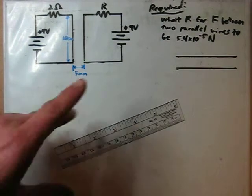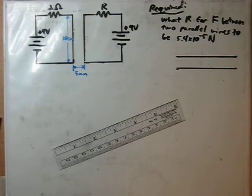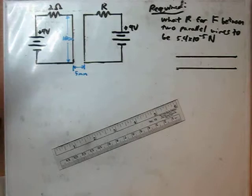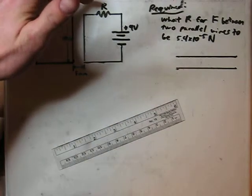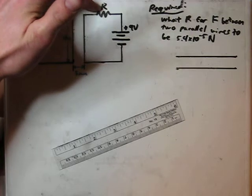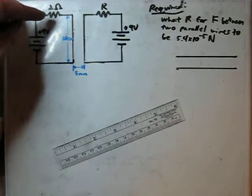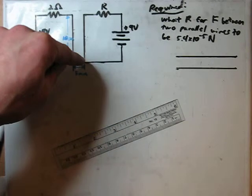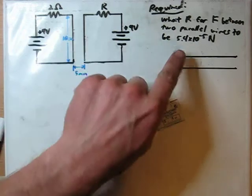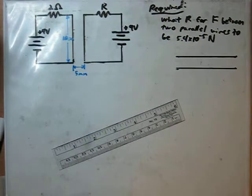I drew out this wiring schematic that they give you in the problem. The question is they want to know what value of resistor here to choose such that the force between these two parallel wires is 5.4 times 10 to the negative 5th Newtons.